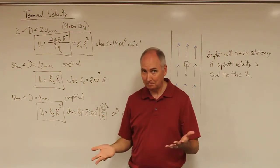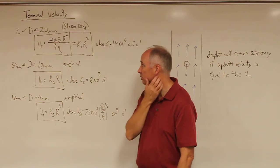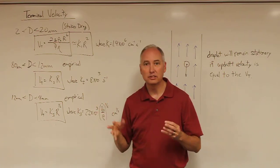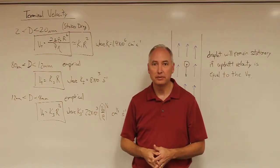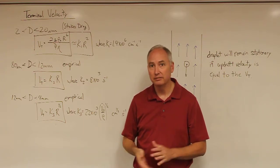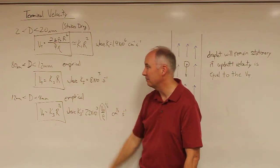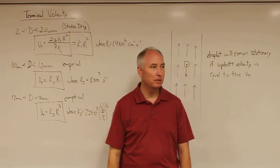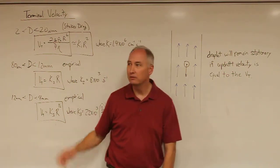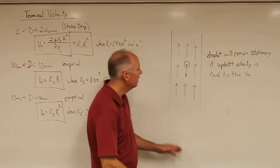Beyond Stokes drag, there's not a mathematical relationship that is easily definable for the fall speed of droplets as they get bigger. So the method that people actually use to determine the fall speed as a function of radius is to use a vertically oriented wind tunnel.